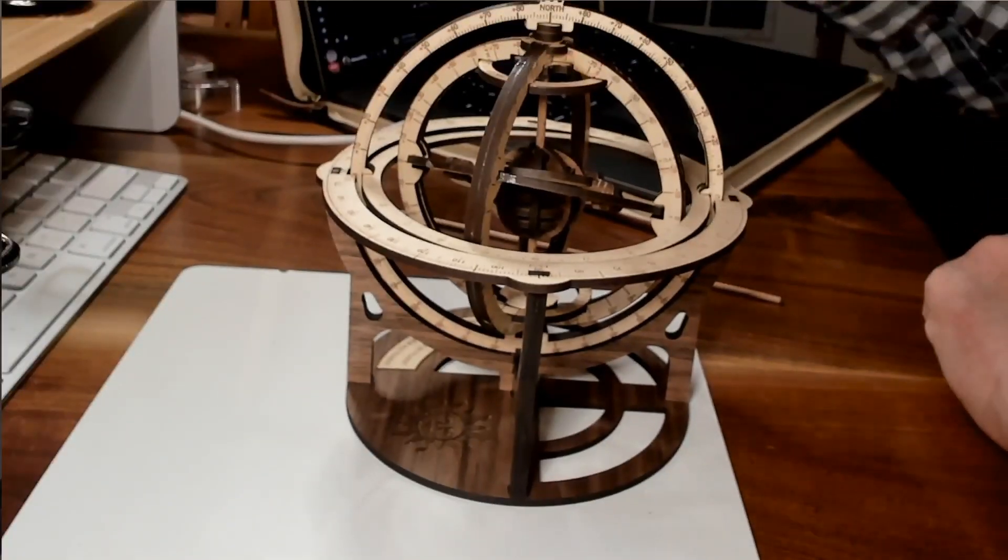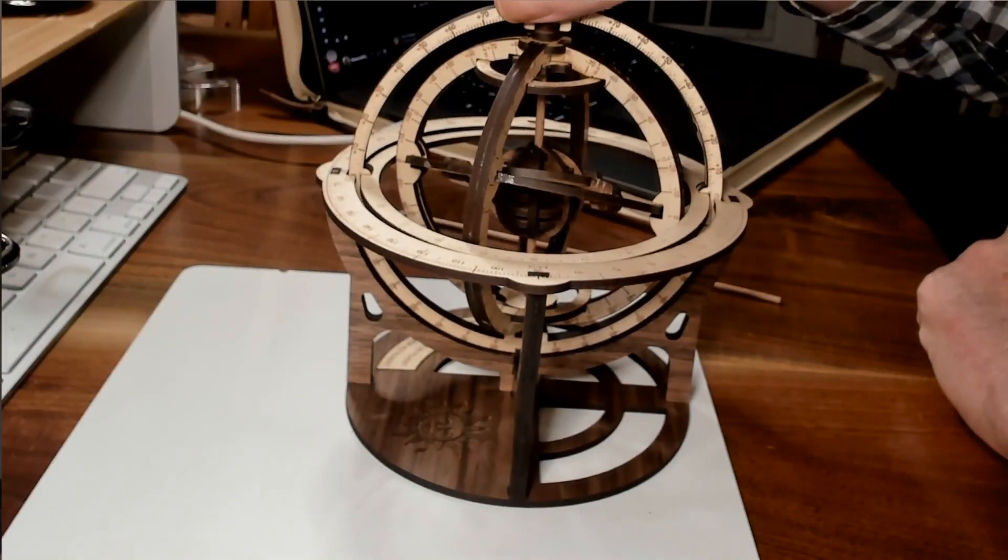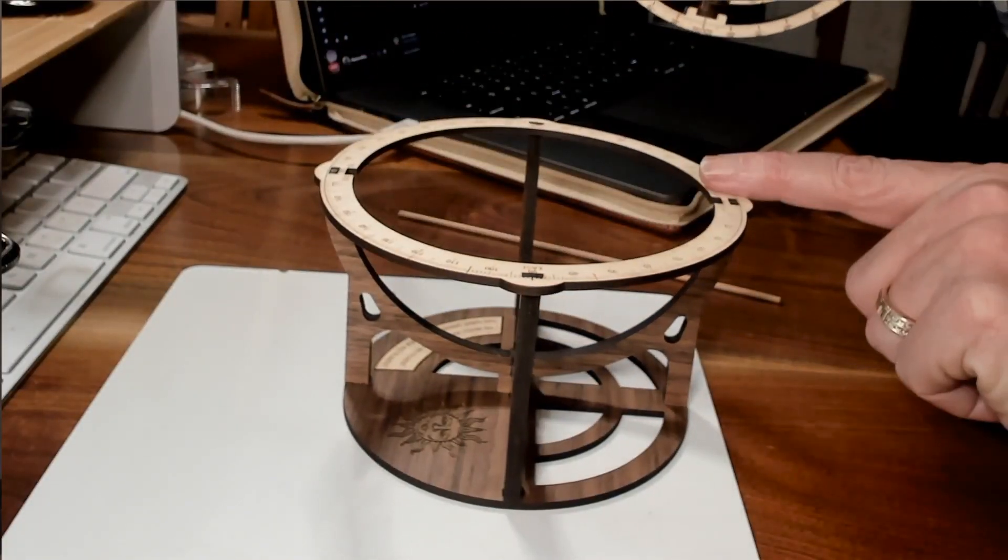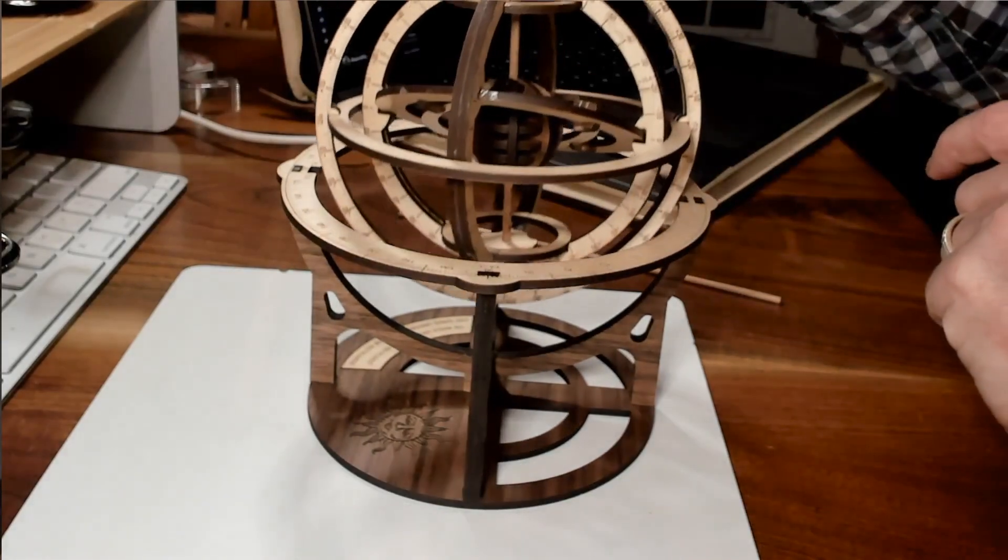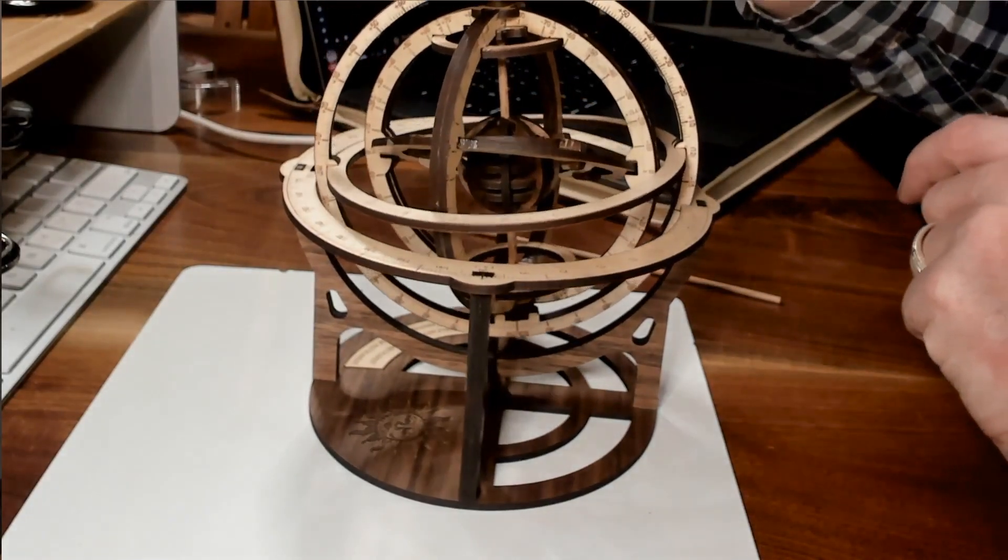So let's have a look at the armillary sphere, how it's designed and how it's put together, and how we set it up to make astronomical observations with it. The armillary sphere consists of two different parts. The first part is the stand, and the second part is the armillary sphere itself.